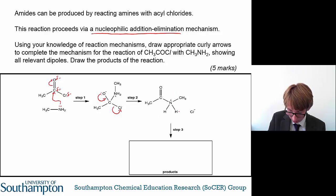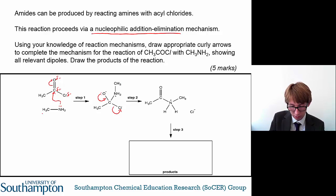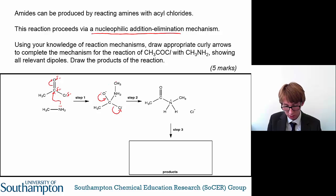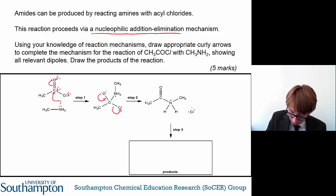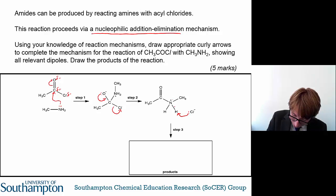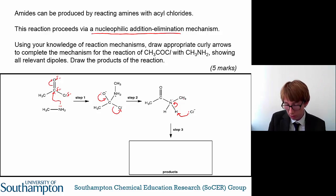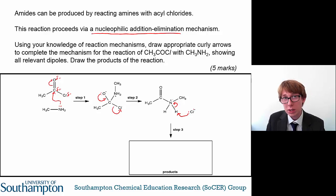What you get is an intermediate structure still with a positively charged nitrogen. Remember, the charges between each step of the reaction must be conserved. In the first step we have no charges — it's neutral. In the second step we have a positive and a negative charge, so overall neutral. And here we again have a positive and a negative charge, so overall it's neutral.